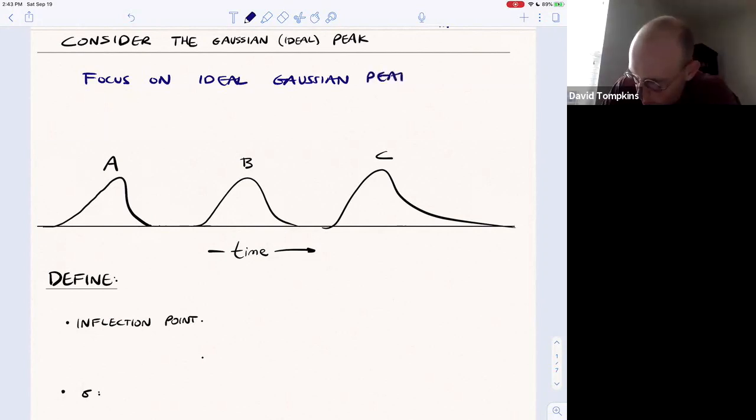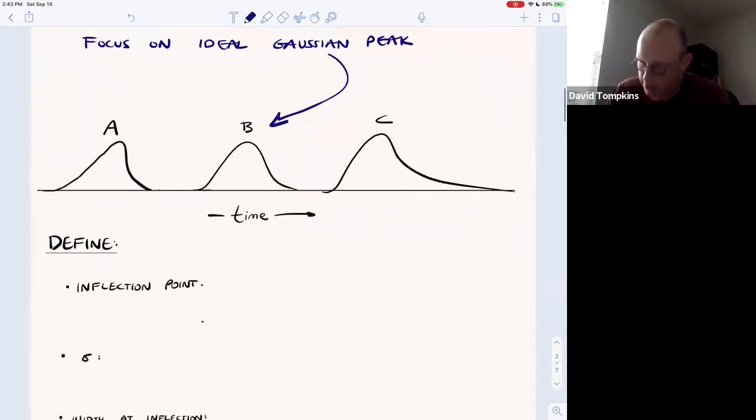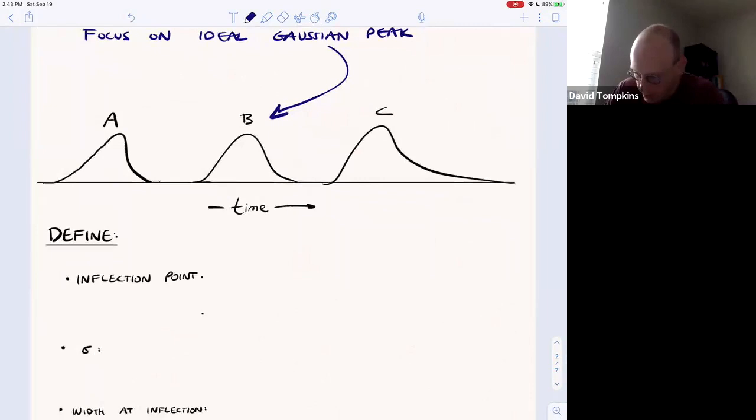And remember that the ideal peak is B here.